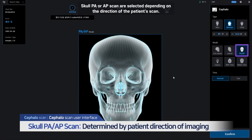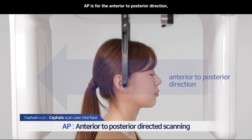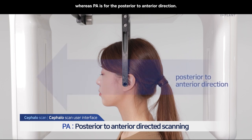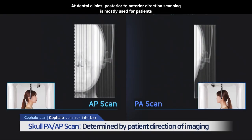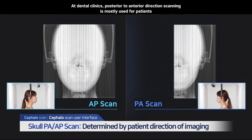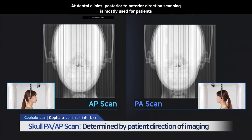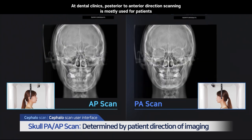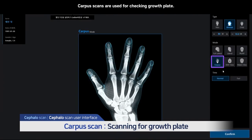PA scan and AP scan are selected depending on the direction of the patient's scan. AP is for the anterior to posterior direction, whereas PA is for the posterior to anterior direction. At dental clinics, posterior to anterior direction scanning is mostly used for patients with an asymmetrical face or for an alignment diagnosis. Carpus scans are used for checking the growth plate.